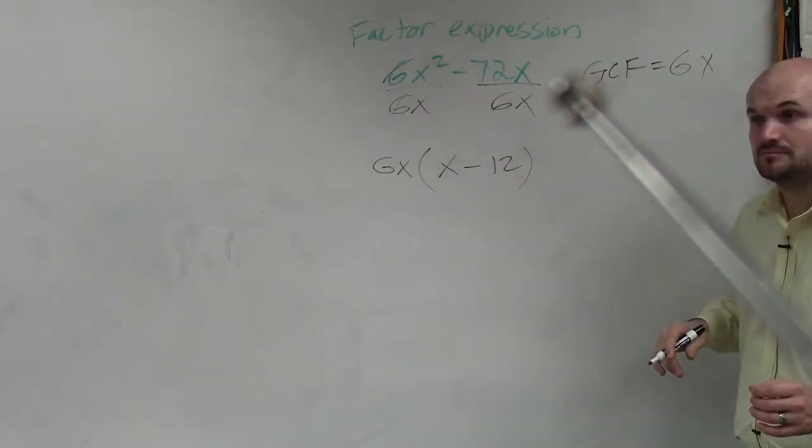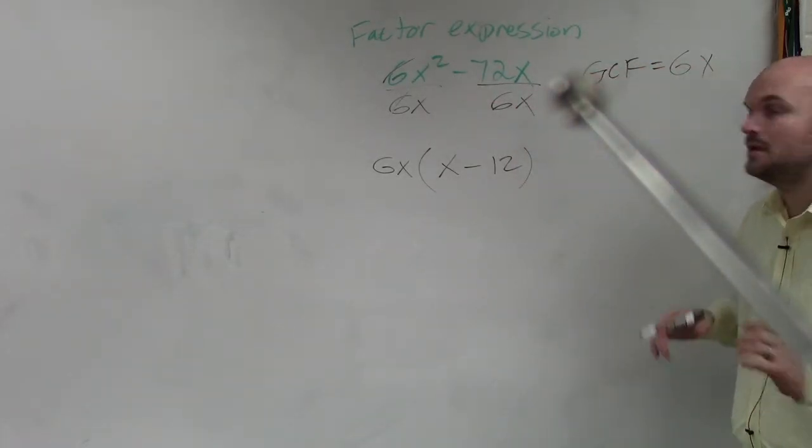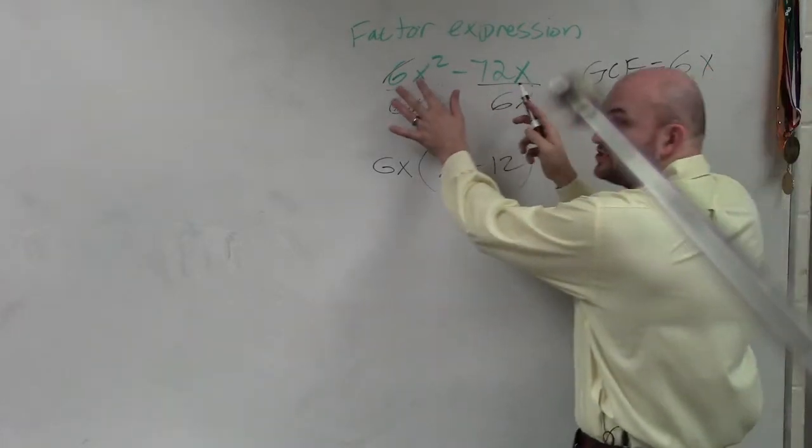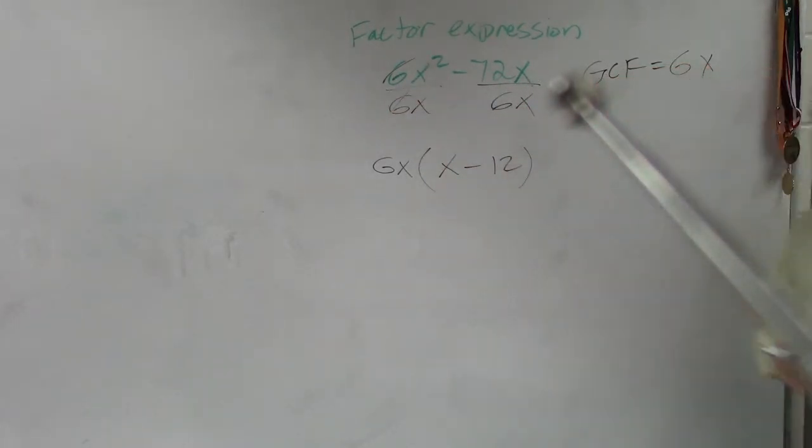Why is it not 6x squared? Because see how these both share an x? So you can divide out an x as well.